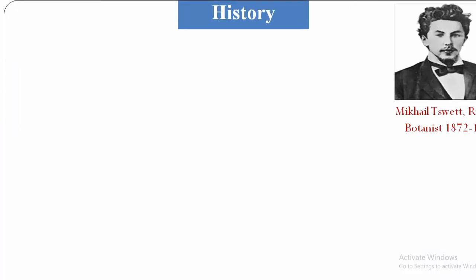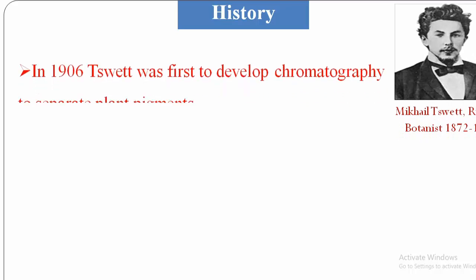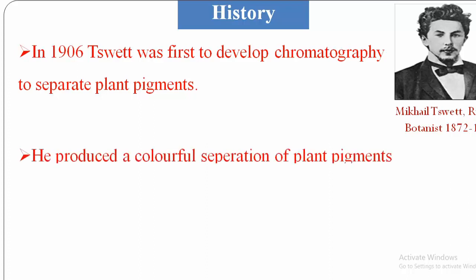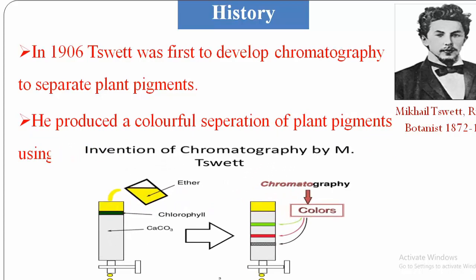First we will see the history. Chromatography — in 1906, Tswett was the first to develop chromatography to separate the plant pigments. He produced a colorful separation of plant pigments using color. You can observe here the invention of chromatography by Tswett: he placed calcium carbonate in a burette and over it added the chlorophyll pigments and a solvent. After that, you can observe the colors and other pigments — they are separated.